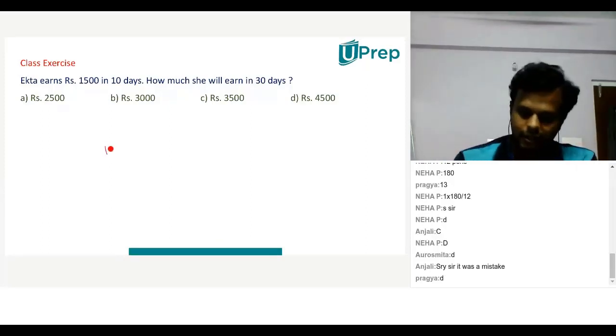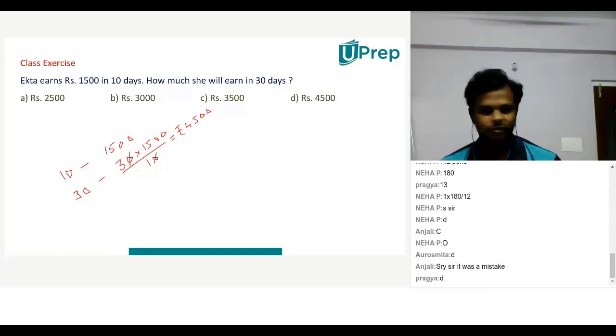So children, here I have 1500 for 10 days. If a person is earning 1500 for 10 days, for 30 days it will be 30 into 1500 by 10. So 3 into 1500 is, 3 into 1500 is rupees 4500.